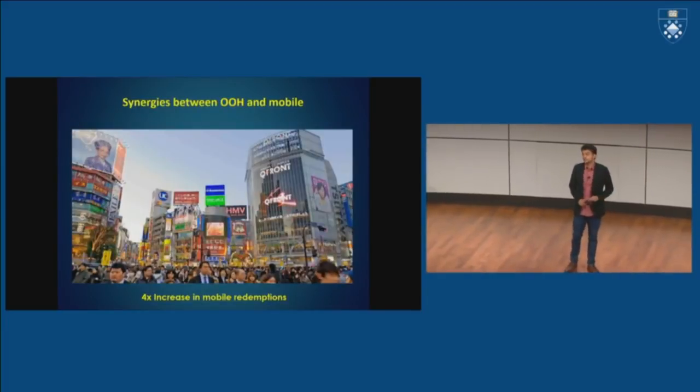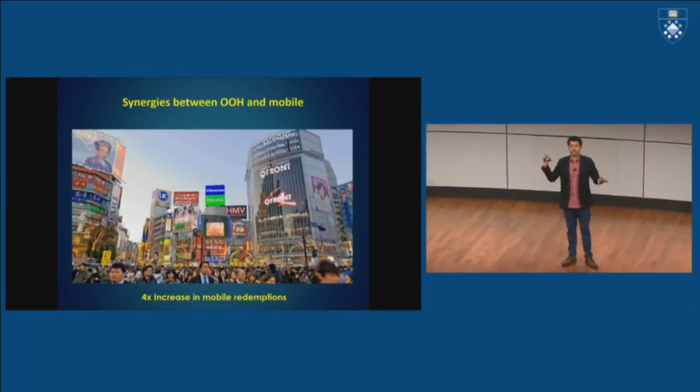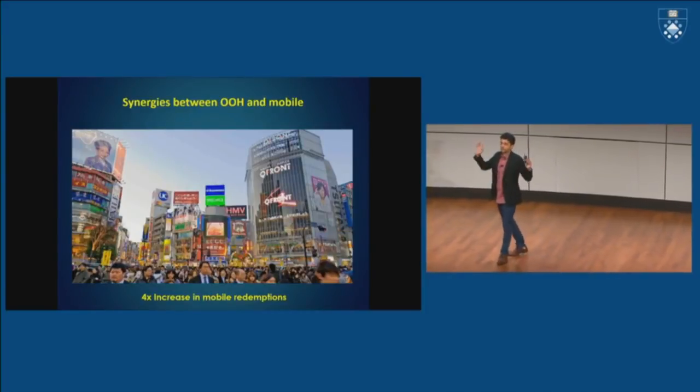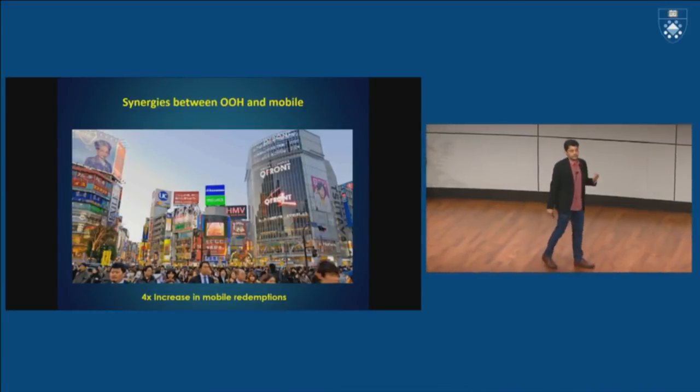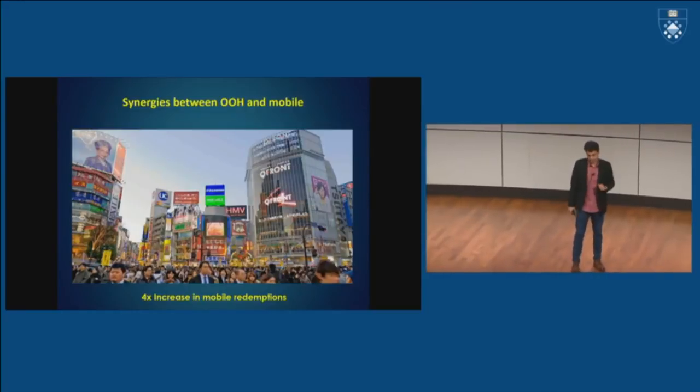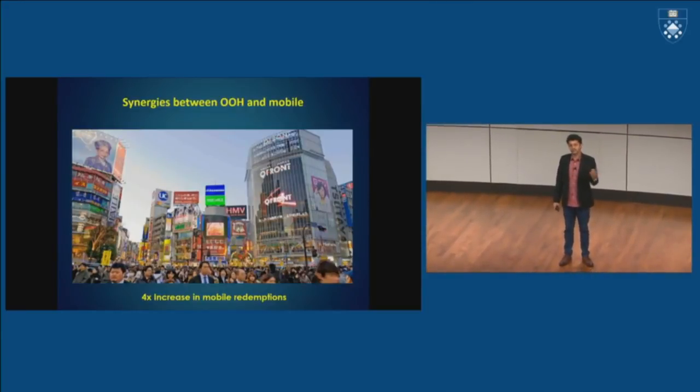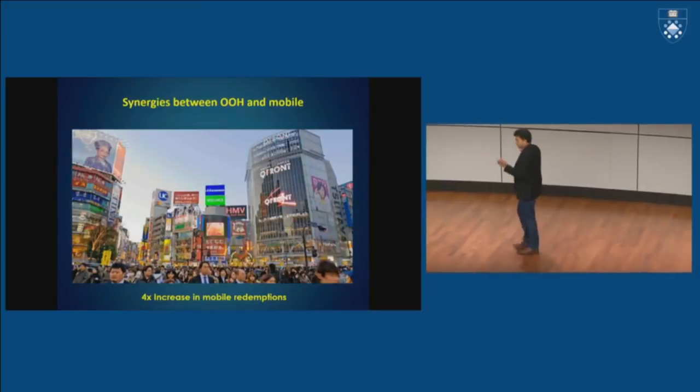All right, here's another example where we leverage potential synergies between mobile and outdoor overhead billboards. So this is a scene from Shibuya crossing in Tokyo, so if you've been there, it's like a million people crossing there every single day. So here's a well-known space for very valuable real estate for outdoor billboard ads, so you see all these screens over there, they have LED screens, so the ads keep changing every three minutes.